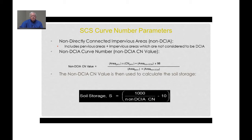The SCS curve number parameters calculate a non-directly connected impervious area, referred to as non-DCIA, which includes all pervious areas plus any impervious areas not directly connected to the drainage system. For example, we have the area of the pervious parcel times the appropriate curve number, plus any non-DCIA impervious areas such as patios or concrete areas in yards not connected to the drainage system, for which we assign a curve number of 98. You divide that by the total area to get the non-DCIA curve number value, which is then used to calculate the soil storage according to the SCS equation.